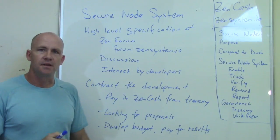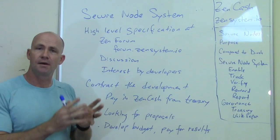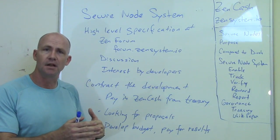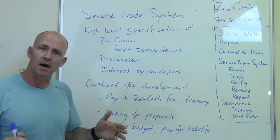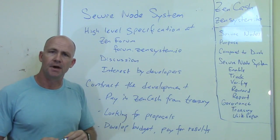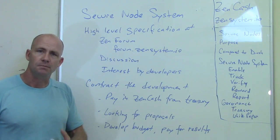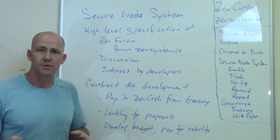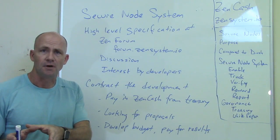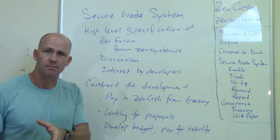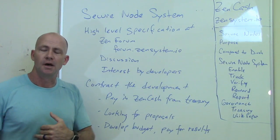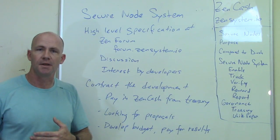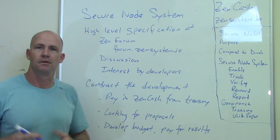We're having a discussion on the Zen Forum at forum.zensystem.io — I'd love to see what different developers and people think about this. We're going to contract the development for this. We already have developers working on the Zen node software implementing OpenSSL. In parallel, I want to develop the ZenCash secure node tracking and payment system. I see this as a piece of software running on nodes — maybe a Python script — that checks the challenge location, provides the response, and does that on a regular basis.